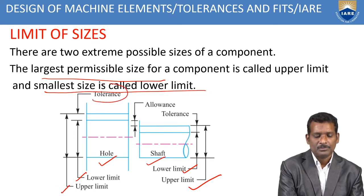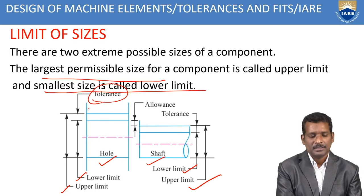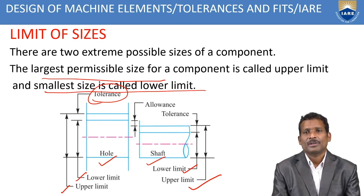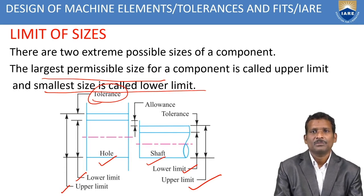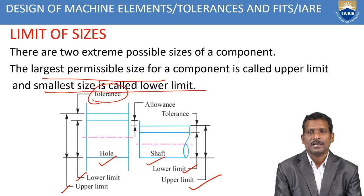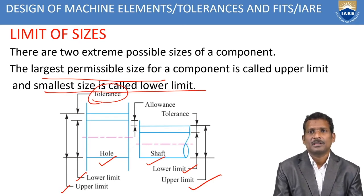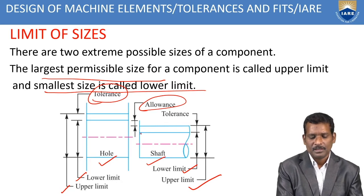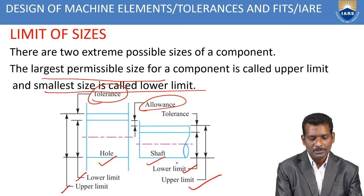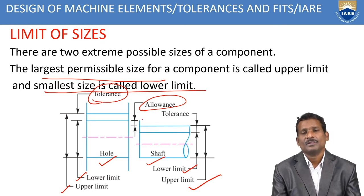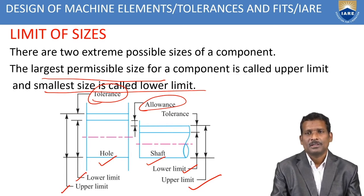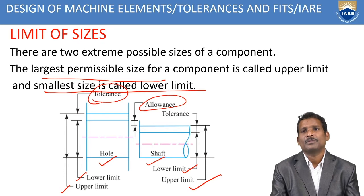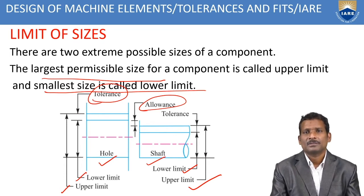The tolerance is the difference between the lower limit and upper limit — that is, the maximum size minus the minimum size. Allowance is the difference between the upper limit of the shaft and the lower limit of the hole. These are very important terminologies in tolerance and fits.